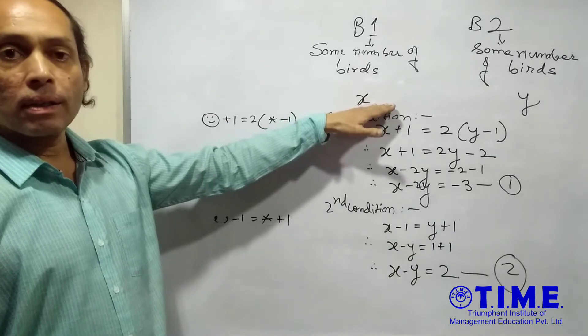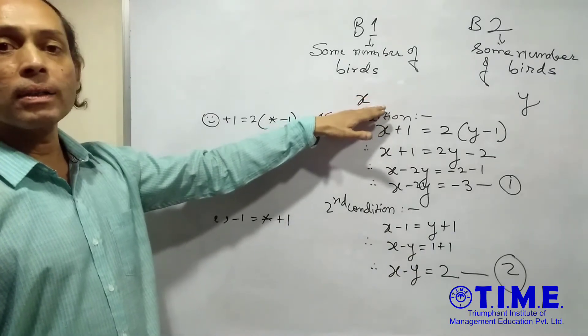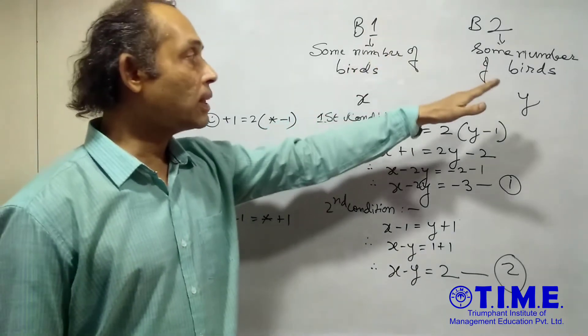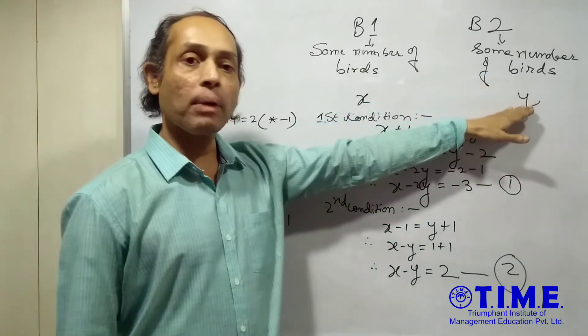So here, if one flies from here, it will become X minus 1. One has gone from here to that side. So X minus 1 and this will become Y plus 1.